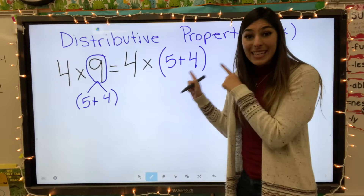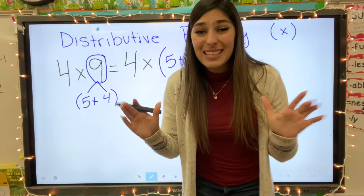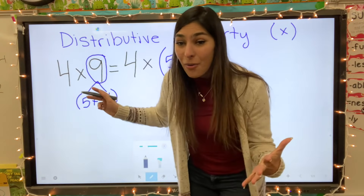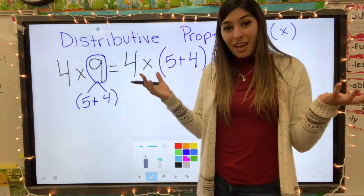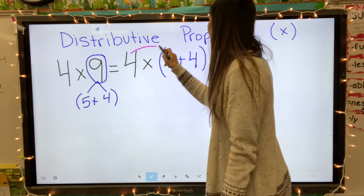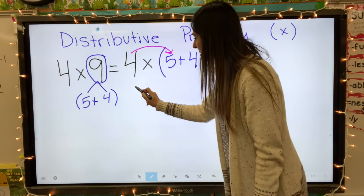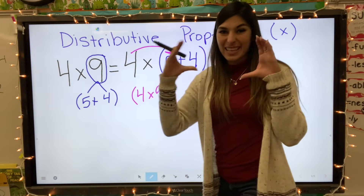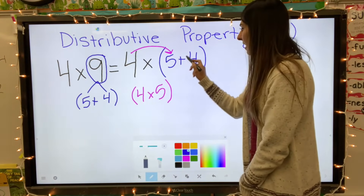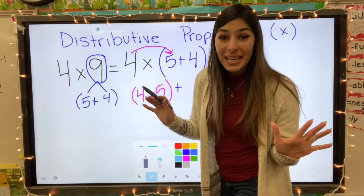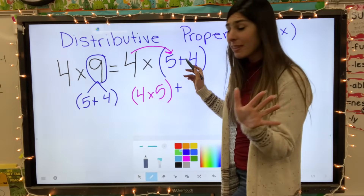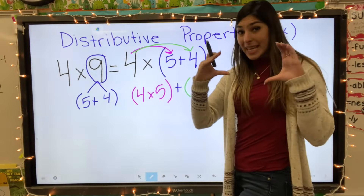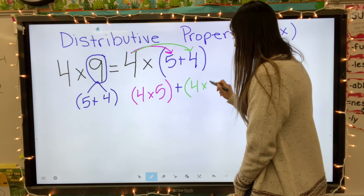This is where the sharing the love comes in. Originally, the four only had to share its love with the nine, but now it has two new numbers and it has to share the love between both. So we're going to share the love with the five — that's going to be its own equation: four times five. Don't forget the parentheses. Then we cannot forget to share the love with the other number, so we share from this four to that four — four times four — and again add the parentheses.